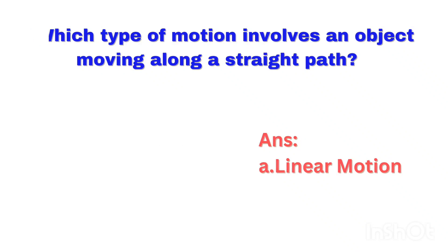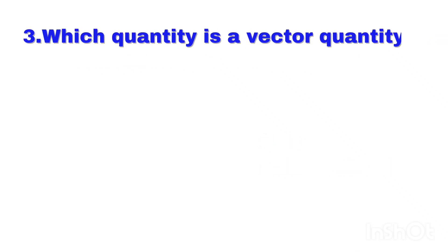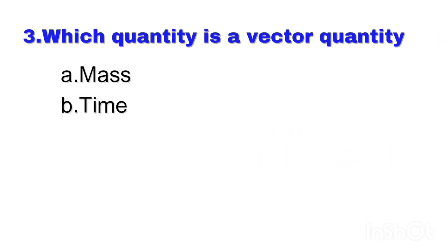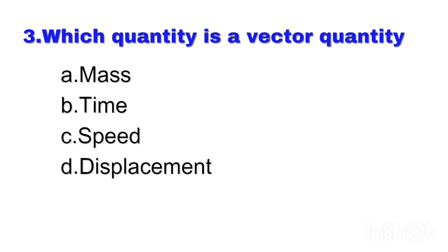Question number 3. Which quantity is a vector quantity? Right answer: Option D — Displacement.